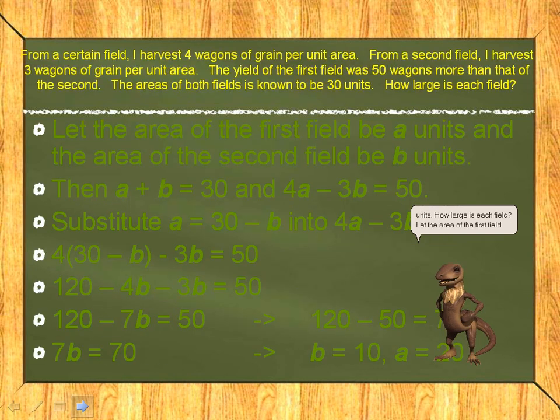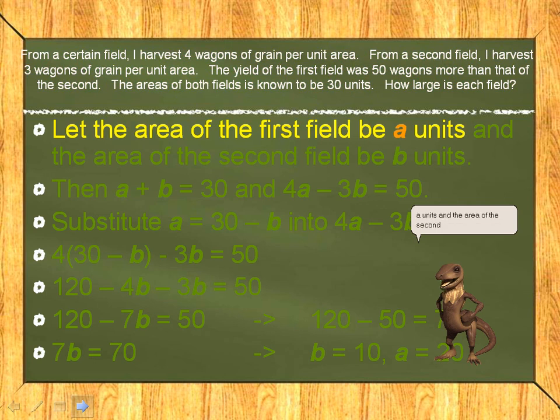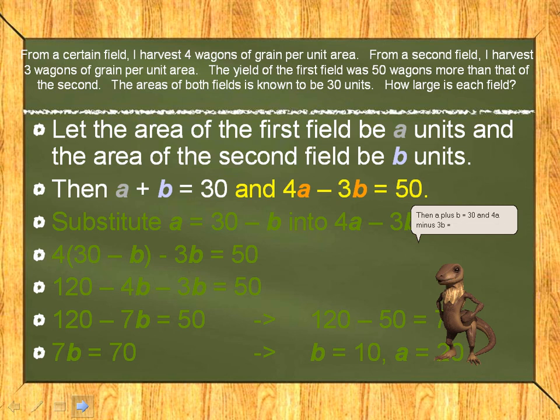Let the area of the first field be a units and the area of the second field be b units. Then a plus b equals 30 and 4a minus 3b equals 50. Substitute a equals 30 minus b into 4a minus 3b equals 50.